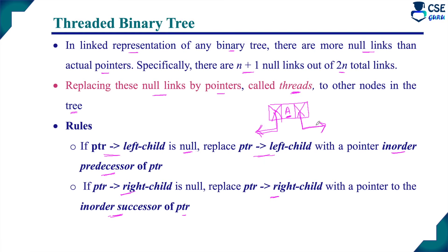These are the two main rules to construct the threaded binary tree. In the linked representation, normally only these two links are maintained as null links. Left child null → connect to in-order predecessor; right child null → connect to in-order successor. This is the threaded binary tree.